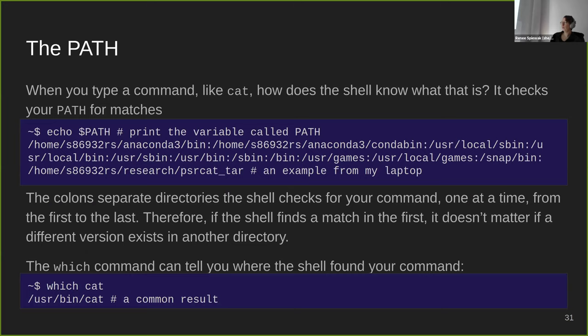When you're running commands, the shell has to figure out exactly what command you're trying to run — what does 'cat' mean to the terminal? What it does is search a variable called PATH for matches for that command name. PATH is a string of directory paths separated by colons; the shell goes from the first path to the last and stops when it finds a match. So if it finds the command in the first path, it doesn't search the rest.